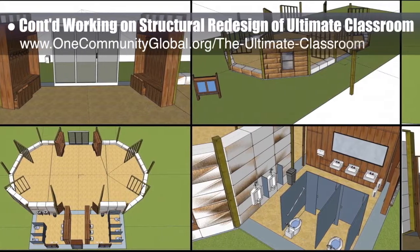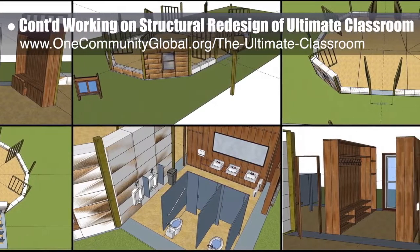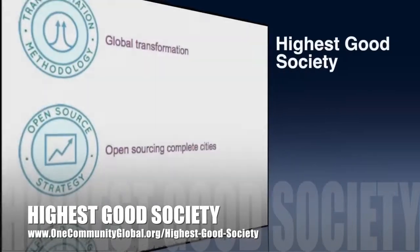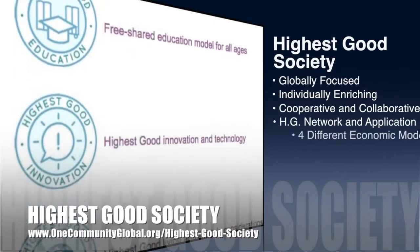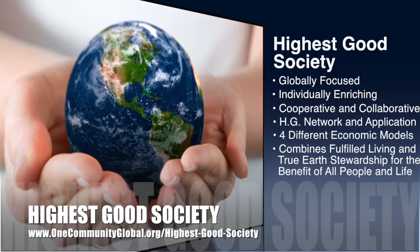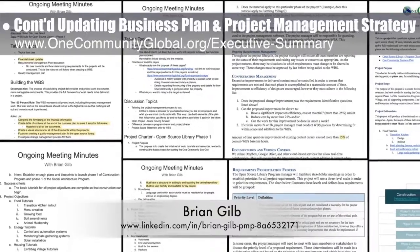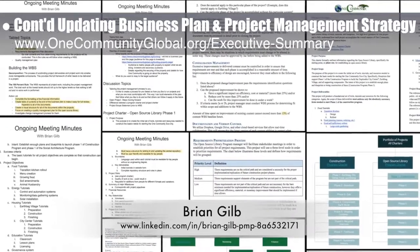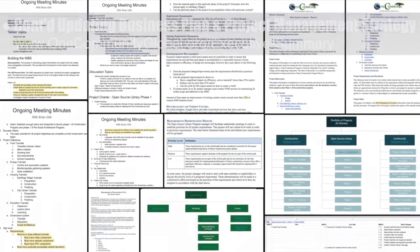This week the core team continued working on the structural redesign of the ultimate classroom. We redesigned and expanded the bathrooms and cubby storage spaces, added a sliding glass door entry for the south side, and started testing the straw bale walls and windows. One Community's approach to Highest Good Society is globally focused, individually enriching, cooperative and collaborative, includes a Highest Good network and application, four different economic models, and combines fulfilled living and true earth stewardship. This week the core team, working with Brian Gilb, project management professional, continued the fourth week of updating our business plan — rewriting the open source library program charter and project charters, and beginning task, subtask, and work package outlining for the complete food component.